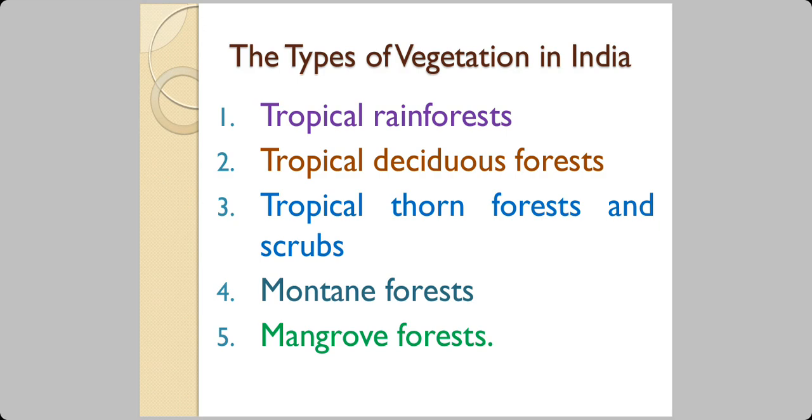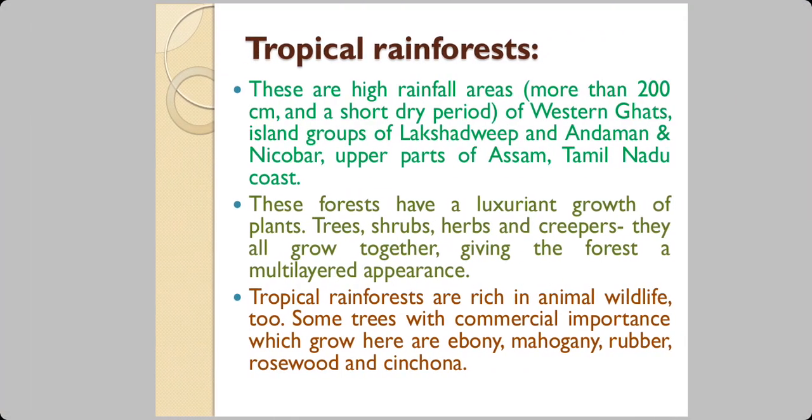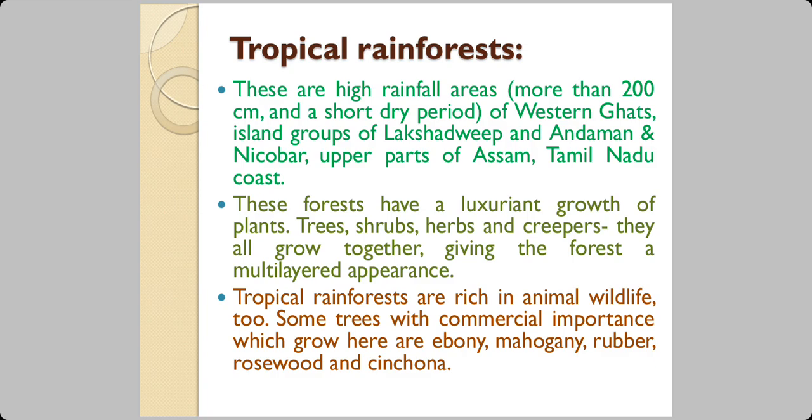These are the five types of vegetation found in India. Tropical rainforests are found in areas with very high rainfall. The trees here are very sturdy and produce timber that is strong, durable, and very much in demand. There is a variety of plants — grasses, trees, shrubs, herbs, and creepers — all growing together, giving the forest a multi-layered appearance. This is one of the key characteristics of tropical rainforests.